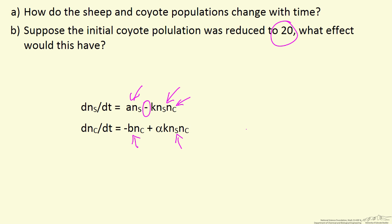This says as we have more sheep and more coyotes, we have more food for the coyotes to eat. Like this term, but this proportionality factor alpha is much less than 1 to make a realistic model.